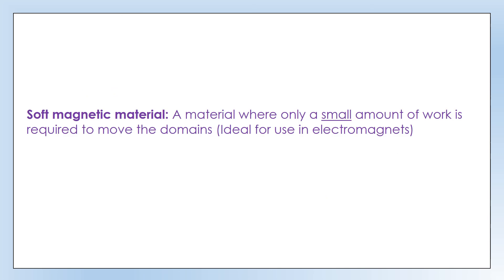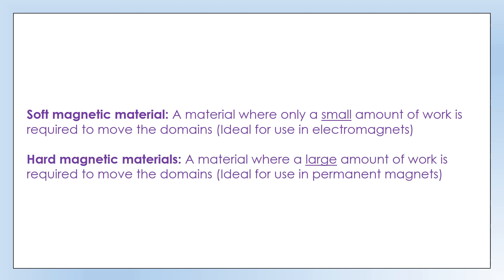To clarify the terminology: a soft magnetic material is one where only a small amount of work is required to move the domains, making them ideal for use in electromagnets. A hard magnetic material requires a large amount of work to move the domains, which is why they don't respond when you bring a magnet towards them unless you're hammering or heating them.